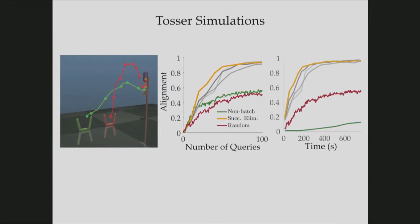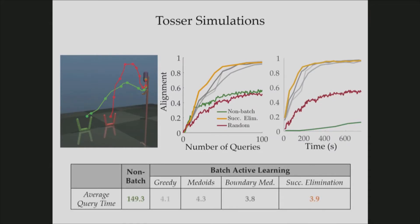Our algorithms do not suffer from this thanks to the discretization of the trajectory space. And we also plotted alignment with respect to time, and as expected, our algorithms were much faster. In fact, the time difference between query generation, the time required for query generation, was even less in this case. The difference was even more.